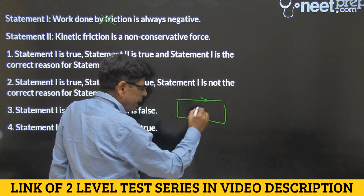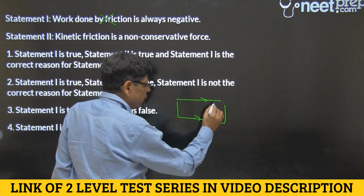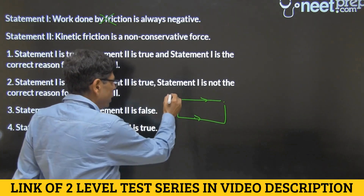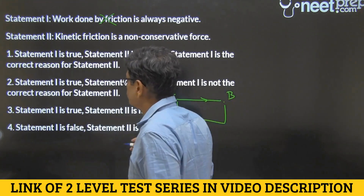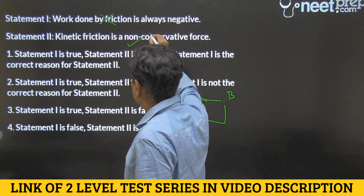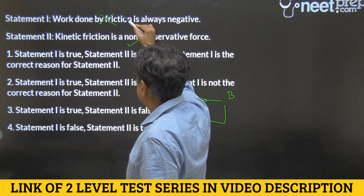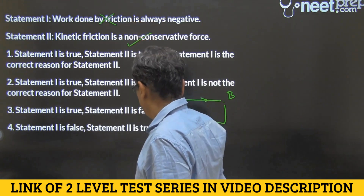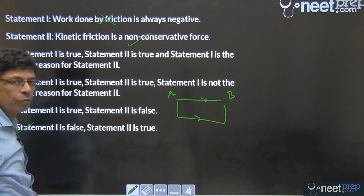Both values are negative, but the one with greater distance is larger in magnitude. So the work done between points A and B is path-dependent — kinetic friction is not a conservative force. This statement is correct and true. Statement 1 is false, Statement 2 is true. Shall I go for option 4?